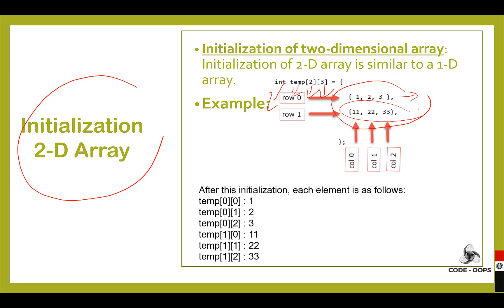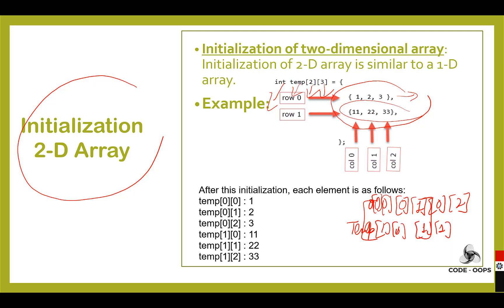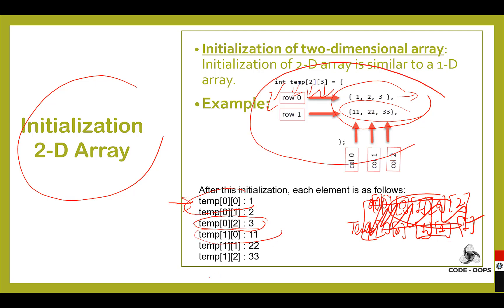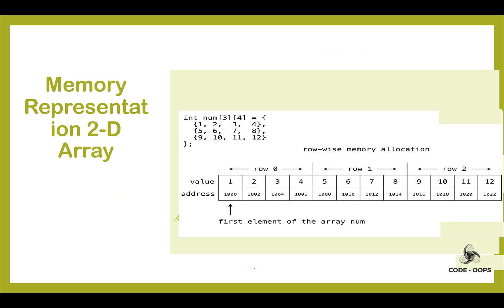After initialization, each element is stored in memory as follows: the first element is stored at index temp[0][0], the second element at temp[0][1], the third element at temp[1][0], the fifth element at a[1][1], and the last element at temp[1][2]. Next is the memory representation of the 2D array. There are two ways for the representation of a 2D array in memory.